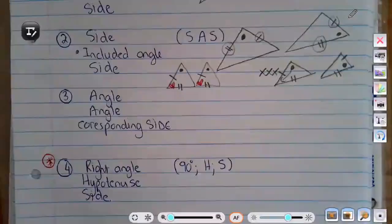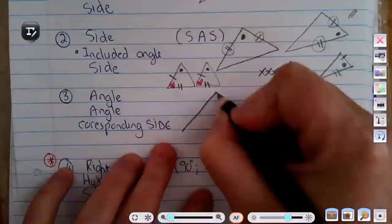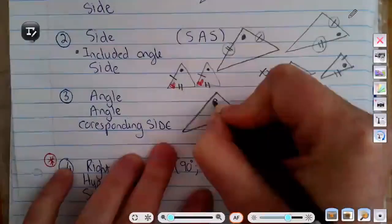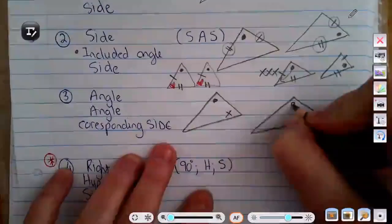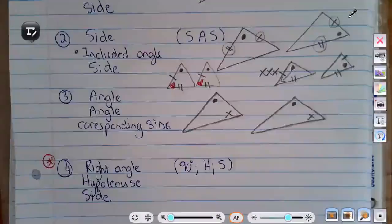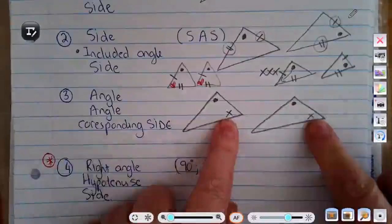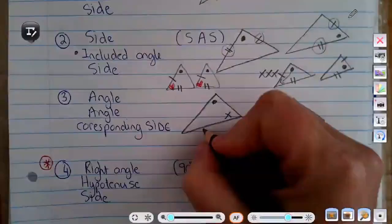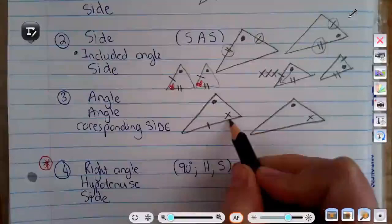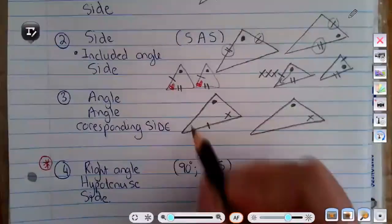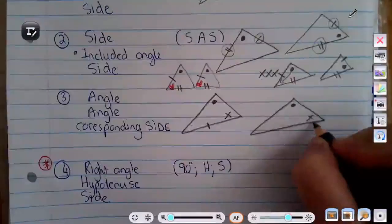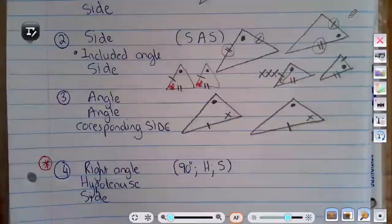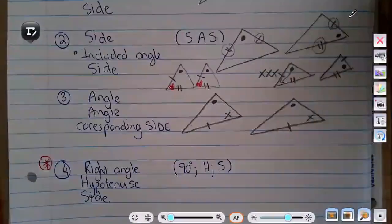The third rule is Angle-Angle-Corresponding Side — two given angles and a corresponding side. You must know these four things off by heart. For example, if I mark a side touching the cross and the open angle on one triangle, then on the other triangle it must also touch the cross and the open angle — that is the corresponding side.